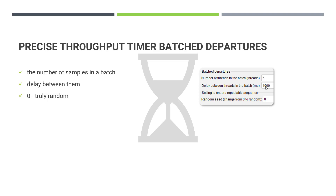Another important setting is the random seed. By default, the random seed is set to zero, which is truly random and cannot be predicted each time. But if you want to repeat the same randomness again and again, you can set the value to a non-zero value, for example 10 or 20. Then whenever you execute the JMeter test, it will follow the same randomness. That is the purpose of the random seed.